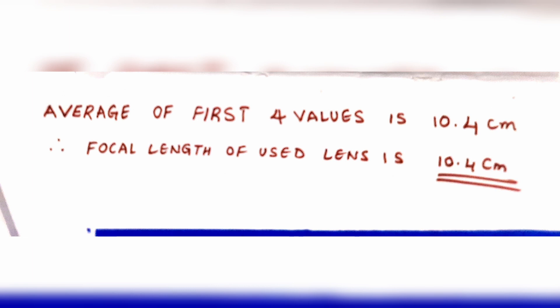Observe the above table — all the values of focal length are approximately nearby values. So now we find the focal length of the lens by taking the average of the first four values, which is 10.4 cm. This is the determination of focal length by using U and V values.